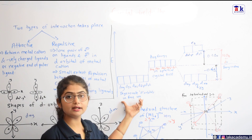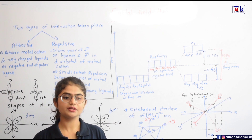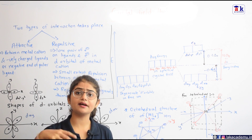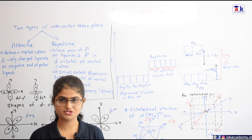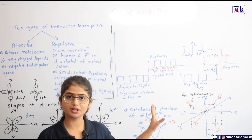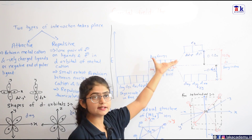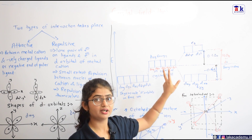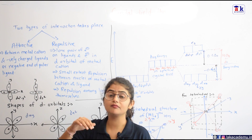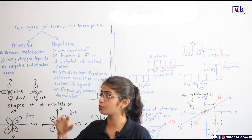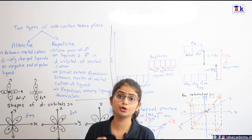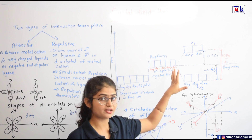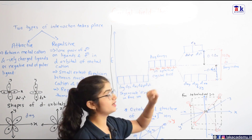In the free metal ion, the d orbitals are completely degenerate. If all six ligands approached in a spherically symmetric way, all five d orbitals would raise their energy equally and remain degenerate — but this is hypothetical. In reality, dx²-y² and dz² have lobes along the axes, and since octahedral ligands approach along x, y, and z, these two orbitals experience more repulsion and a greater increase in potential energy than dxy, dyz, and dxz.